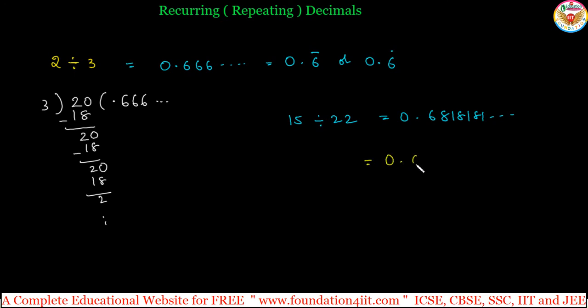That means you can write 0.681. First time only you can keep, do not write one more 8, 1. So 6, 8, 1, 8, 1 is repeating. Or else you can write 0.681 with two dots: one dot is on 8 and one more dot is on 1. These are the recurring, that means non-terminating repeating decimals.